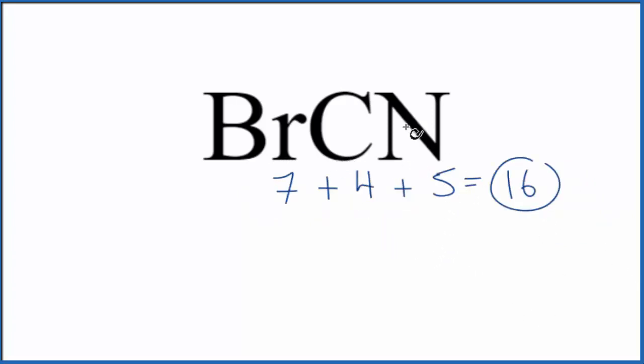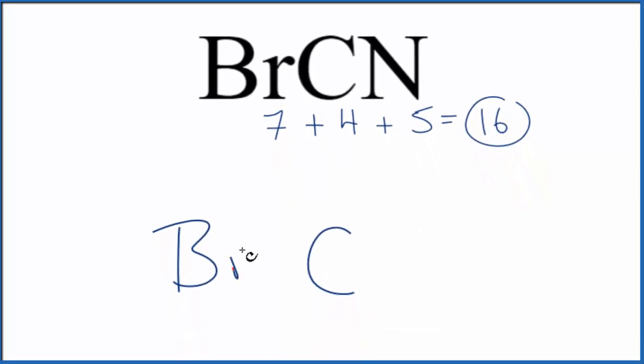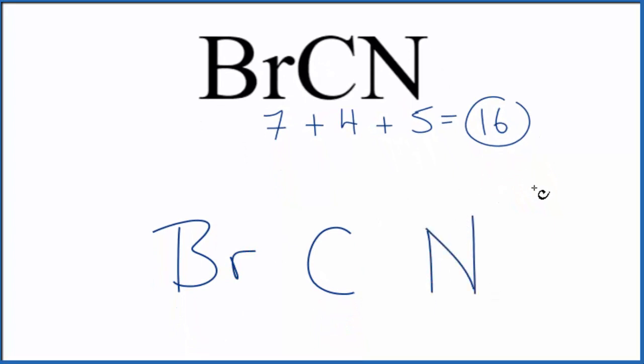Let's put the least electronegative element in the center. Let's put the carbon in the center here, and then the bromine on one side and the nitrogen on the other. So we have 16 total valence electrons. Let's form bonds between each of the atoms here. We've used up four, and then we can complete the octets on the outside atoms here.